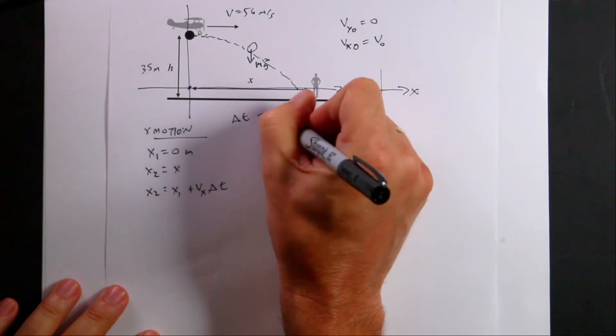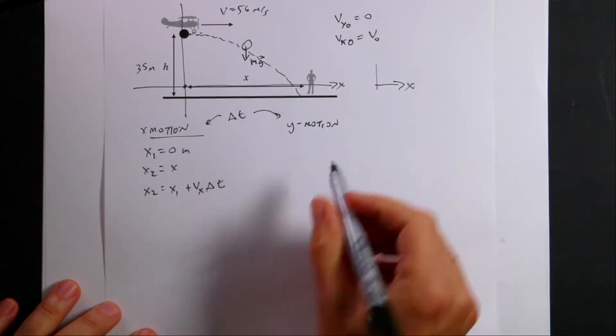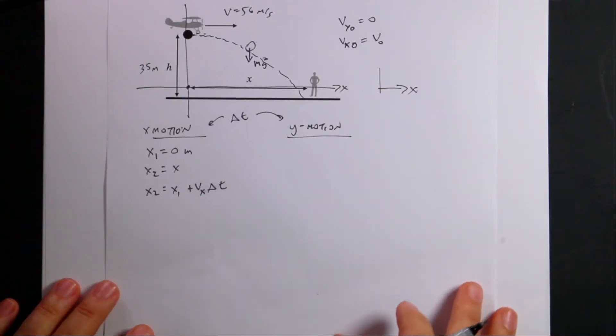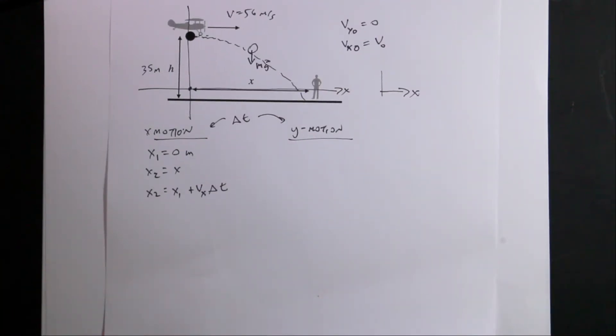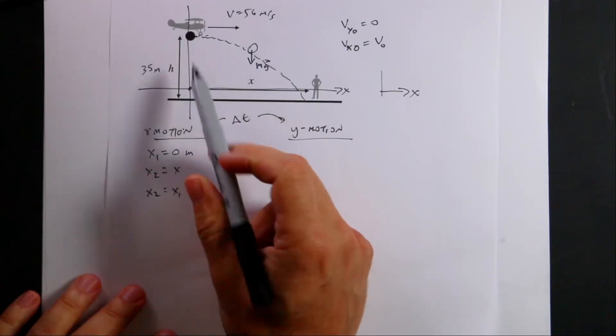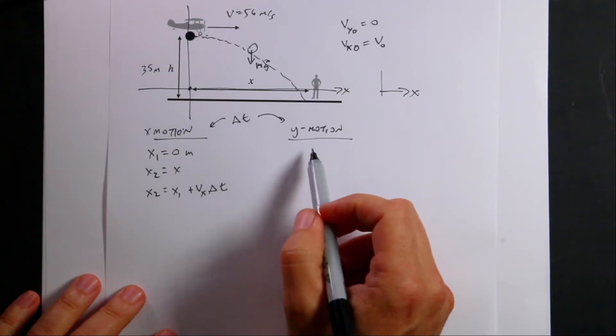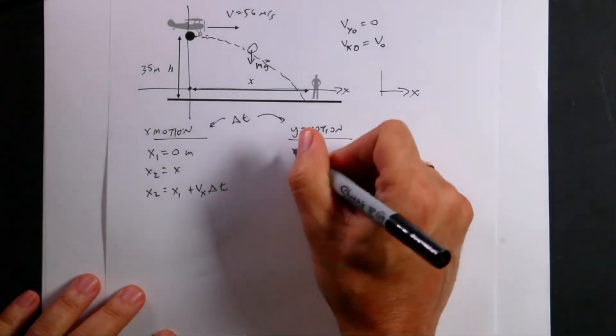So the key with projectile motion is that we have a one-dimensional motion in the x direction and a one-dimensional motion in the y direction, and they are independent except for the time. So the time it takes for this to move in the vertical direction is the same time it takes to move in the horizontal direction. So if I find the time from here, I can use that over here. So let's write down what we know.